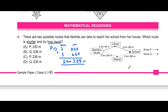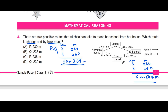Now for route Q: 3 km 264 m plus 2 km 280 m. Adding: 264 plus 280 gives 544 m, and 3 plus 2 gives 5 km. So route Q is 5 km 544 m. Comparing: route P is 5 km 308 m and route Q is 5 km 544 m, so route P is shorter.